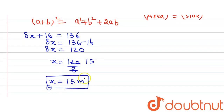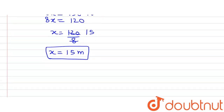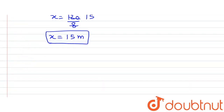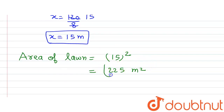So x equals 15 meters. This is the side of the inner square — the lawn. We now have the side of the lawn, and since the lawn is square-shaped, the area of the lawn equals side squared: 15 raised to the power 2, which is 225 meter square. This is our answer — the area of the lawn is 225 meter square.